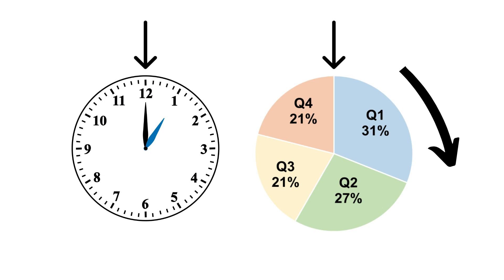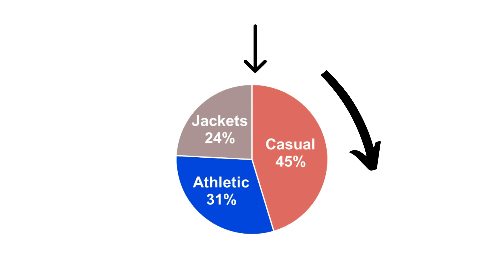Slices of the pie should be placed in an order that makes sense. Here the quarters are shown in order — quarter one, two, three, four — but they could be placed in a different order if you want to emphasize a certain quarter, for example. In this chart, the largest slice of the pie begins at the 12 o'clock position, followed by the next largest slice and the next largest. But we could also sort the data in alphabetical order if that's how people are used to seeing these categories.